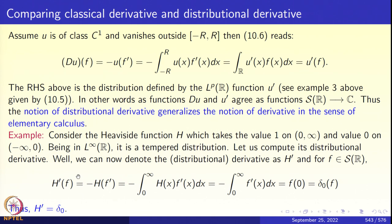By definition, H prime of F equals minus H applied to F prime. Since H is the classical function that is 0 on the negative real axis, the integral runs from 0 to infinity: minus integral from 0 to infinity of h(x) F prime(x) dx. Since h(x) equals 1 on (0, ∞), this collapses to minus integral from 0 to infinity of F prime(x) dx. By the fundamental theorem of calculus and since F is rapidly decreasing, this gives F(0), which is the Dirac mass at F. So the distributional derivative of the Heaviside function is the Dirac delta — h prime equals delta.